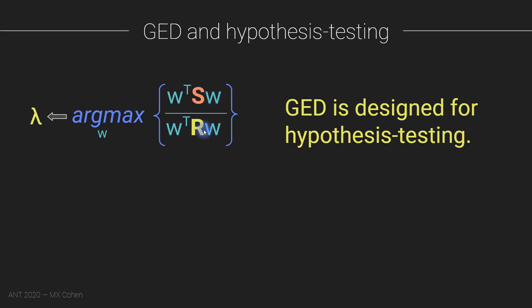GED works similarly to PCA. With PCA, we look for the channel weighting W that maximizes the covariance energy W^T S W of covariance matrix S. With GED, we make a minor tweak: we put another covariance matrix R into the denominator. So now we're looking for a vector that maximizes the ratio W^T S W / W^T R W — the ratio between covariance matrix S and covariance matrix R.